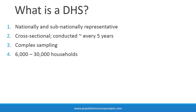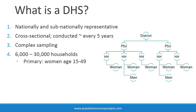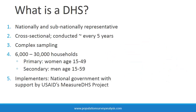In a typical DHS, 6,000 to 30,000 households will be sampled across the country. In the selected households, all women age 15 to 49 are invited to complete an interview. In many countries, a subsample of households also include male respondents age 15 to 59. DHSs are implemented jointly by a country's National Institute of Statistics or similar government agency, with technical and financial support from ICF International under the U.S. Agency for International Development Project, MeasureDHS.